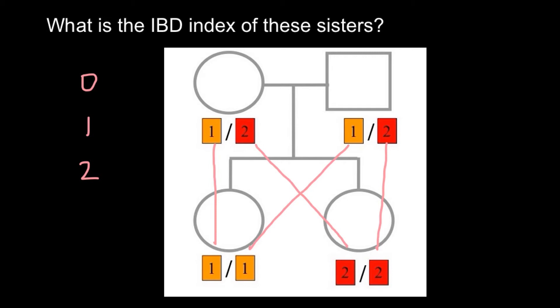So what would be the IBD index? It's very important to understand that we do not compare two alleles within one locus in one person. We compare two loci - the same locus but in two different people.